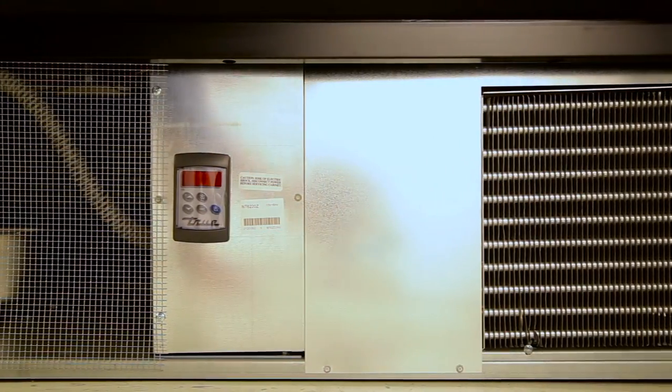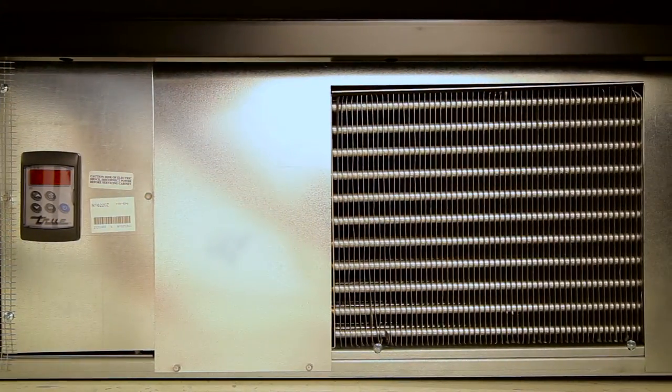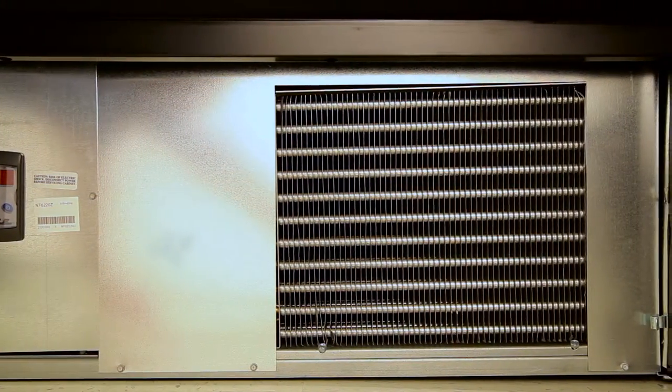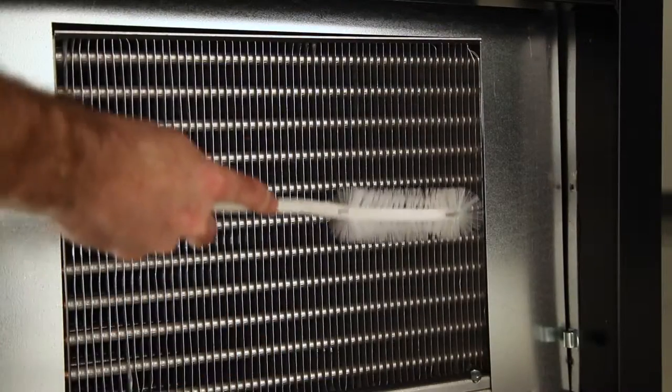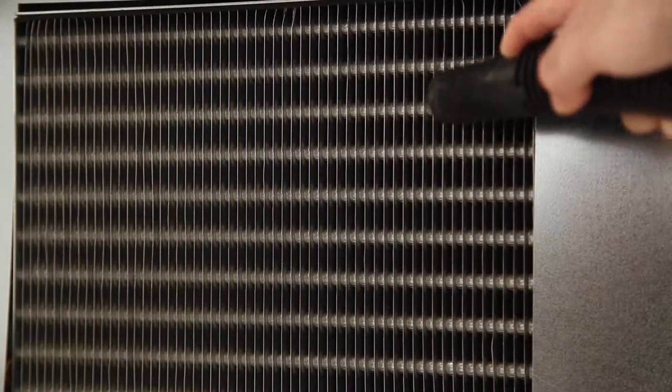A recommended rule is to check the coil every month for the first three months of use. This will tell you how dirty your environment is. Generally, you should be cleaning the condenser coil every 60 to 90 days, depending on the environment in which it is used.